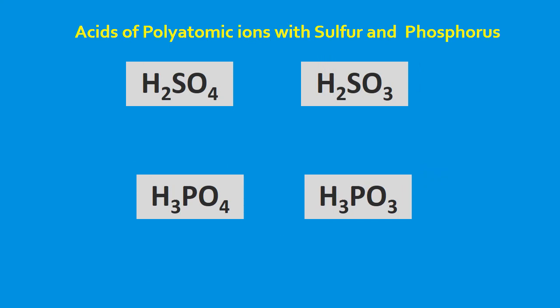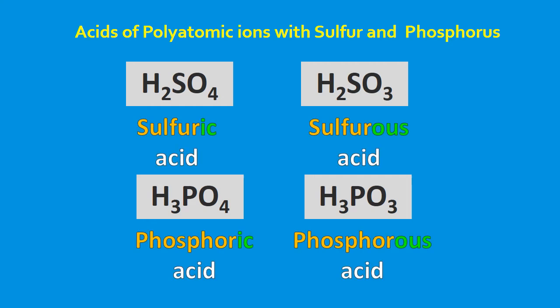Let's look at naming acids of polyatomic ions containing sulfur and phosphorus. The same rules apply: if the anion ends in -ate, replace with -ic plus acid; if it ends in -ite, replace with -ous plus acid. The difference is the root used. For sulfur-containing acids, we always use the root sulfur. For phosphorus-containing acids, we use the root phosphor. These are exceptions to the norm, but we keep the same naming system — only the root changes.